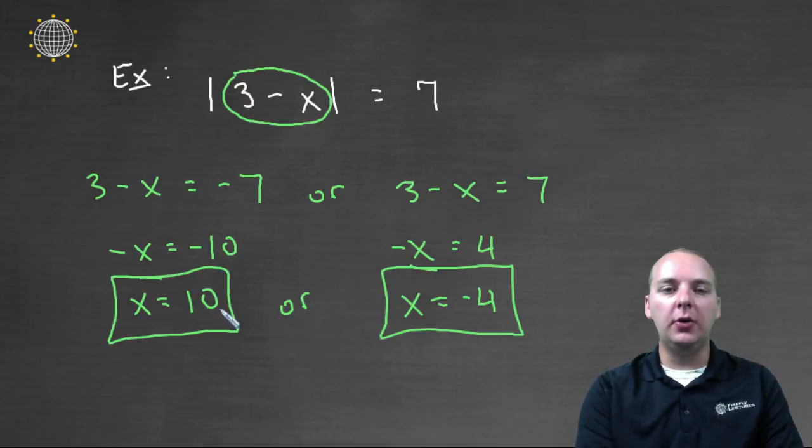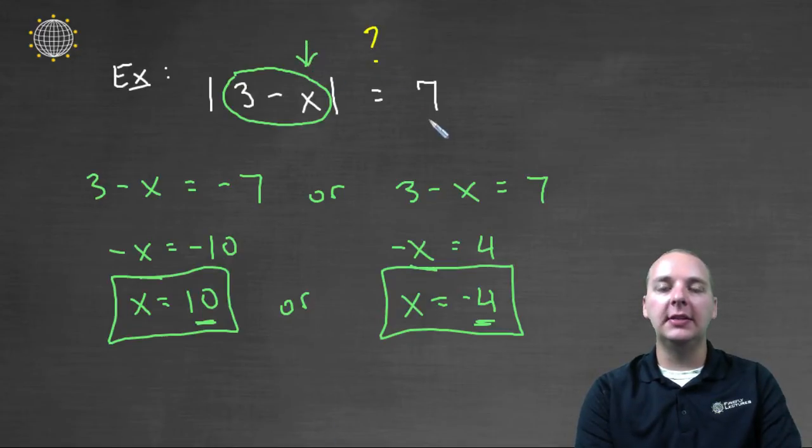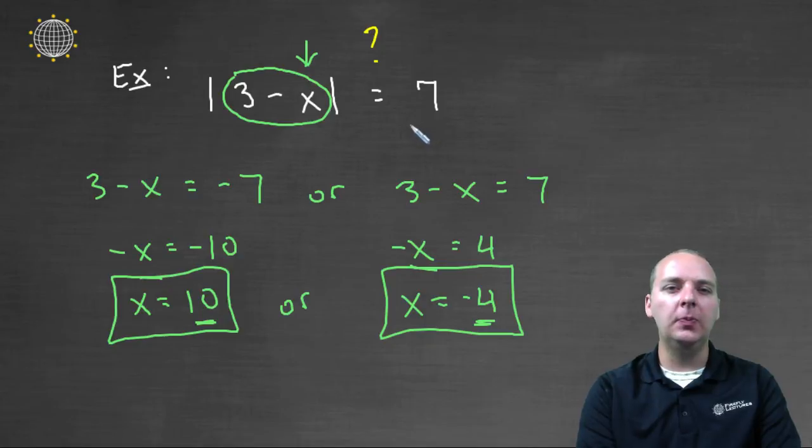So these would be the two solutions to this equation that has absolute values. I'm not going to do it, but you could take ten and negative four and try plugging them in for x, and then see if you actually get seven, and I think you do.